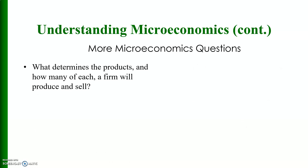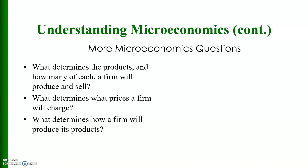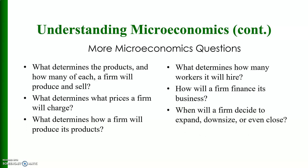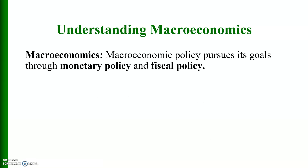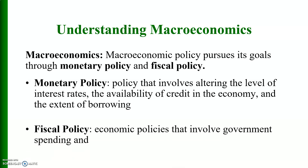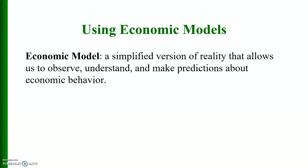Other microeconomic questions include: what determines the products a firm will produce and how many? What prices will a firm charge? How will a firm produce its products, how many workers will it hire, and how will it finance its business? When will a firm expand, downsize, or close? Macroeconomics, on the other hand, pursues its goals through monetary policy — involving interest rates, credit availability, and borrowing — and fiscal policy, which involves government spending.